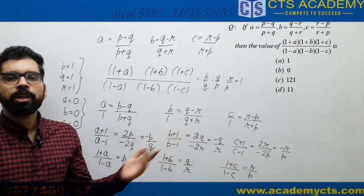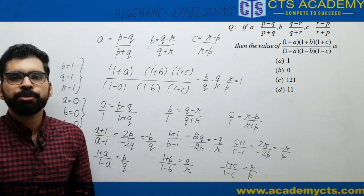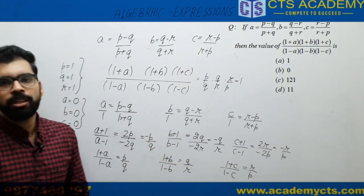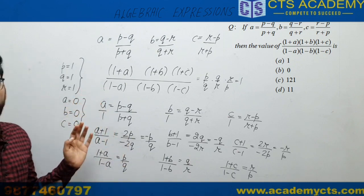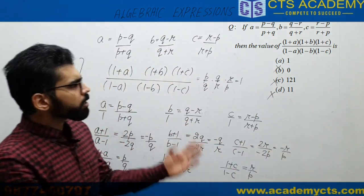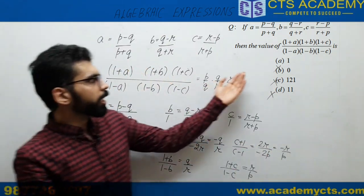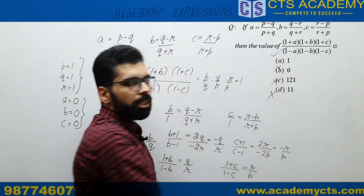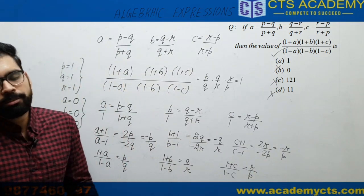In the options, you are given 1 as the first option only. So we get the answer as the first option. By the putting method, options 2nd, 3rd, and 4th get cancelled. If the 2nd, 3rd, and 4th options are cancelled, we can get the answer only as option A. The answer is 1, nothing else.